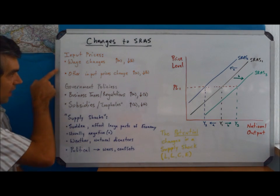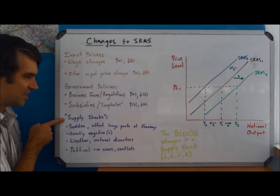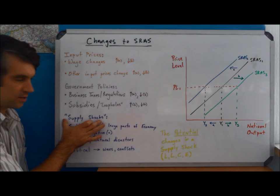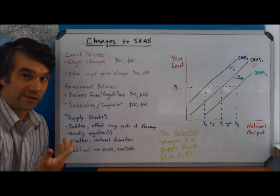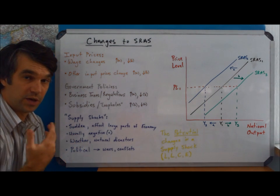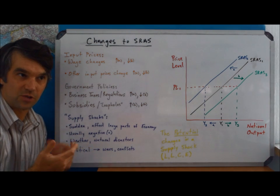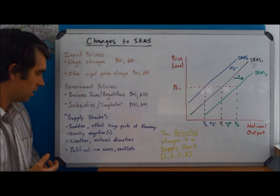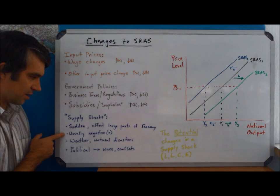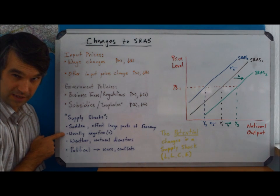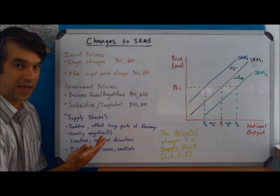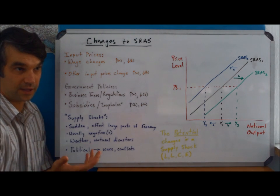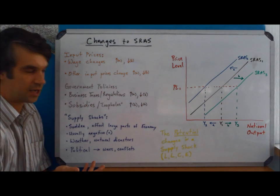Okay, the third type we have, so input prices, government policies, and then this one is just sort of on its own, and these are supply shocks. For something to qualify as a supply shock, it has to be pretty sudden, and it has to be dramatic. That is, it has to affect a large part of the country. Typically, these are going to be negative. There's some cases where we can say that it's a positive supply shock, but most of the time when we talk about it, it is a negative, and therefore it tends to have a negative connotation.